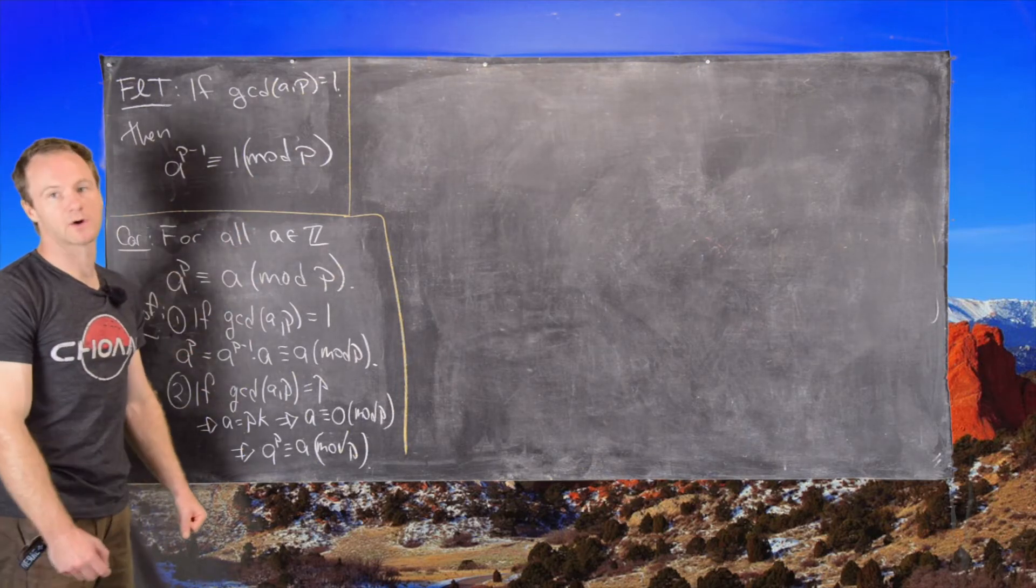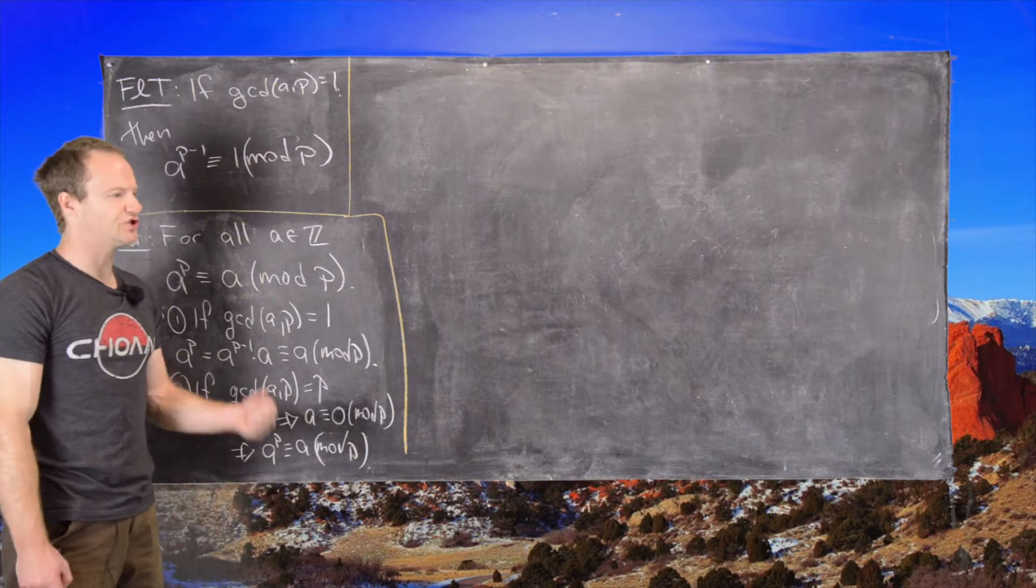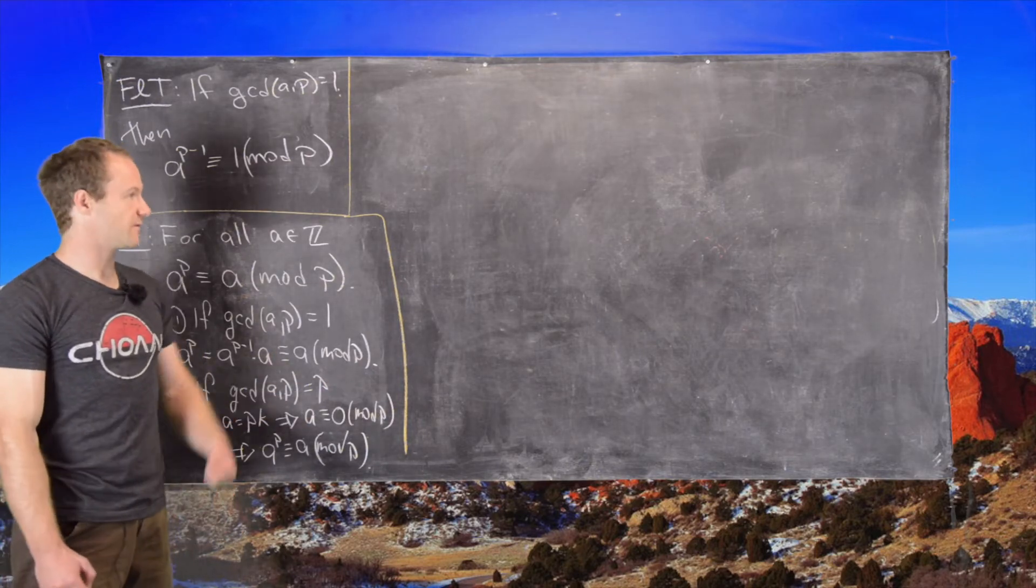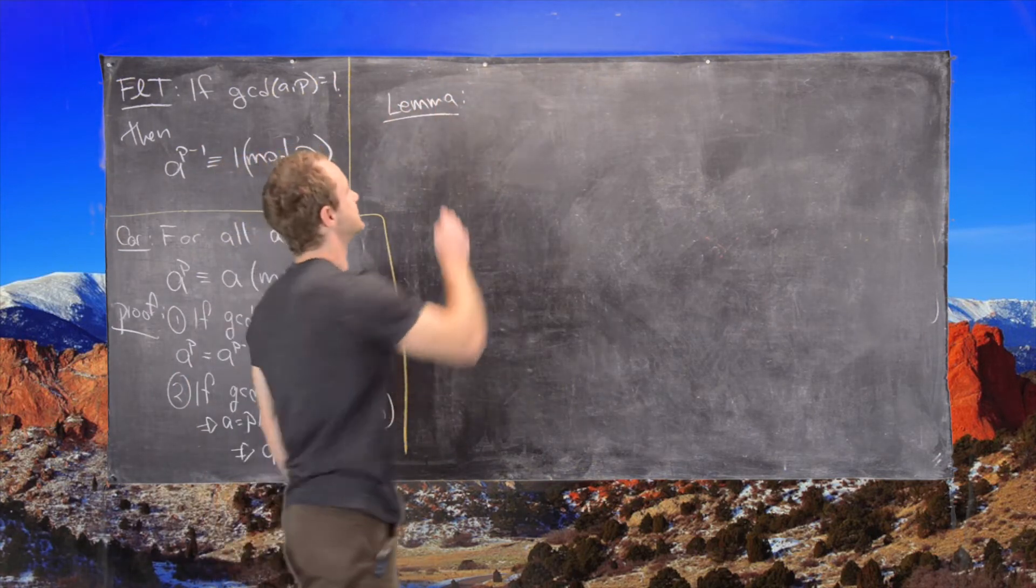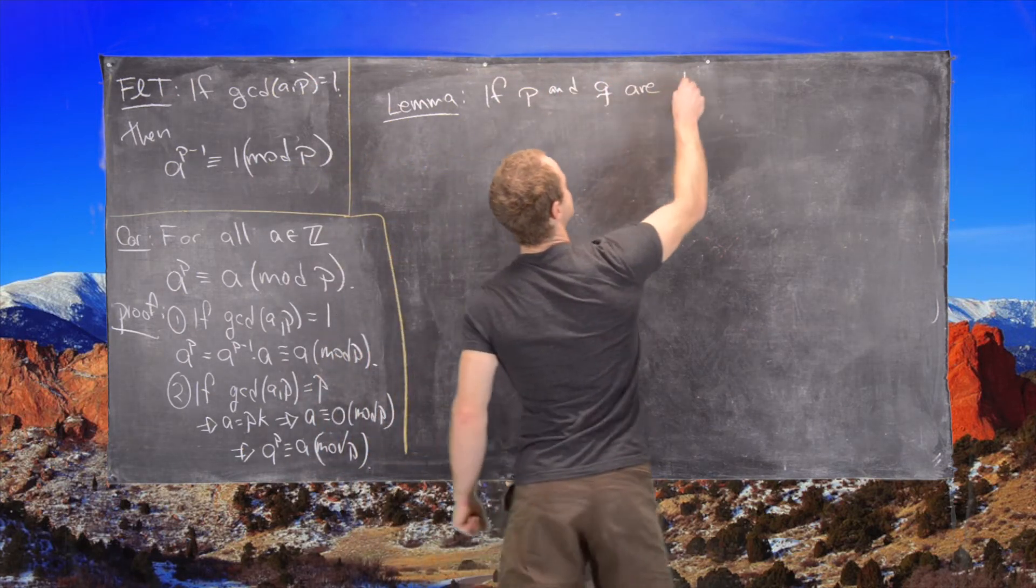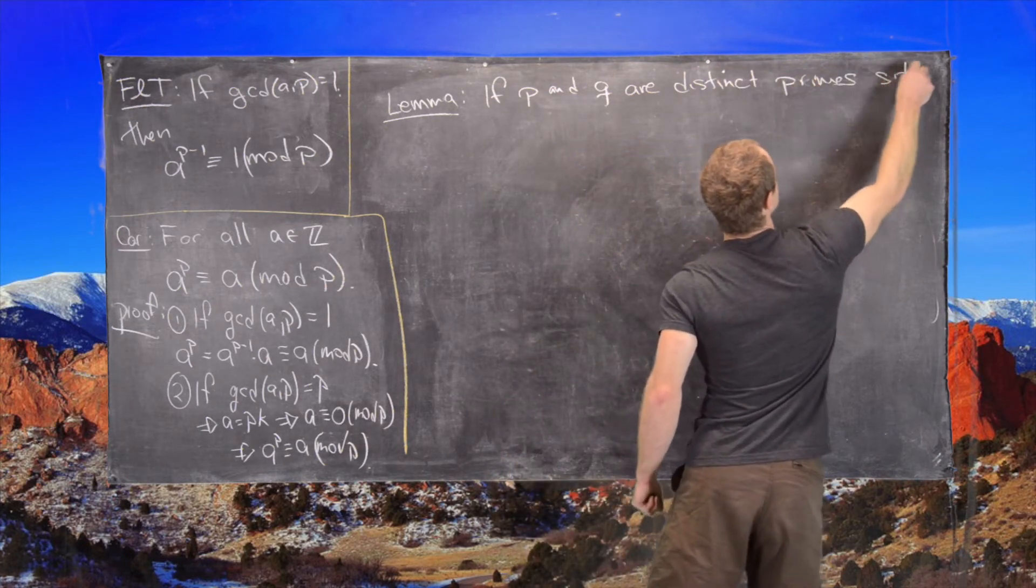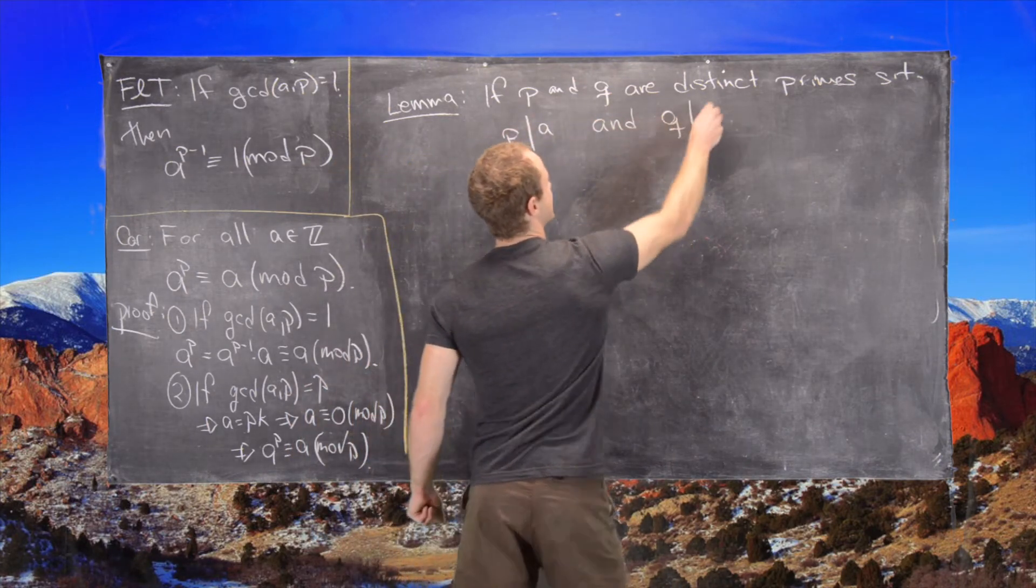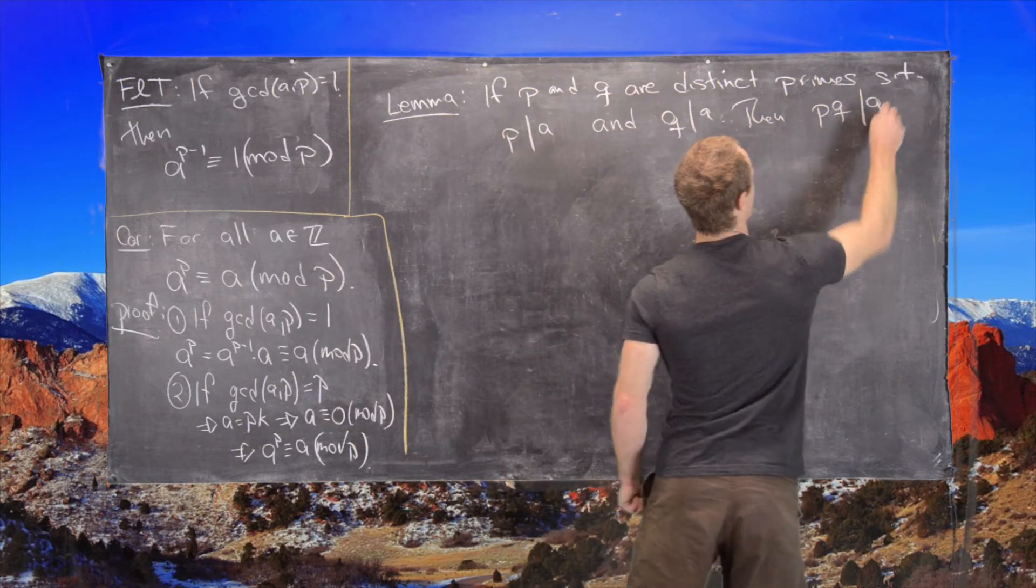So now, before we get into our result that follows from Fermat's little theorem, I want to look at a following lemma first, which you could do almost immediately after learning divisibility, but we'll review it here for the result that follows. So the following lemma is this. If P and Q are distinct primes such that P divides A and Q divides A, then PQ divides A.